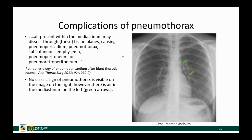Air within the pleural space can theoretically dissect into the mediastinum, from where it can get into the peritoneal cavity and even the retroperitoneum, or it can rise up into the neck area. Here is a case illustrating that: the patient suffered a pneumothorax but there is no visible white line on either side. What I do see, highlighted with green arrows, are linear transparencies over the mediastinum indicating air within the mediastinum — a complication of pneumothorax. This patient probably needs a CT to confirm and assess the size.